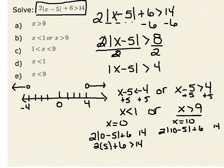10 minus 5 is 5, and the absolute value of 5 is also 5. So I have 2 times 5 plus 6. Now I can see that 2 times 5 is 10, plus 6 more is 16, and 16 is indeed greater than 14.